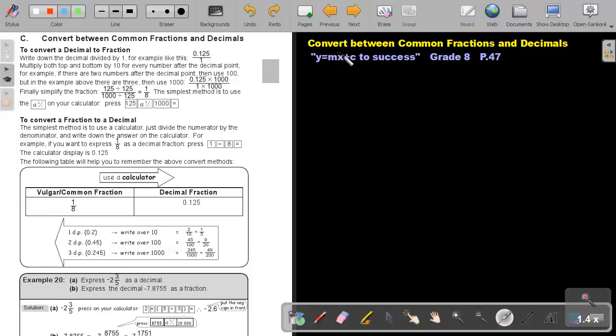Part 19: Convert between common fractions and decimals. You will find this on page 47 in the Namibia Mathematics Grade 8 textbook Y equals NX plus C to success. To convert a decimal to a fraction or to convert a fraction to a decimal, you can just remember this table.